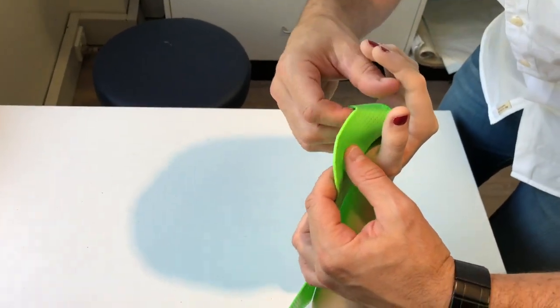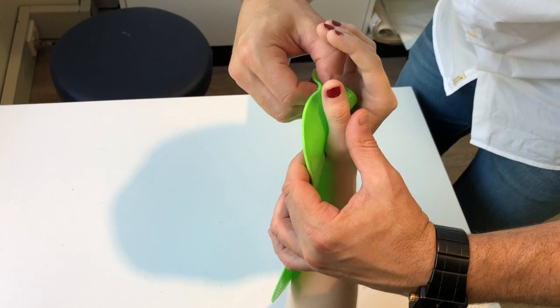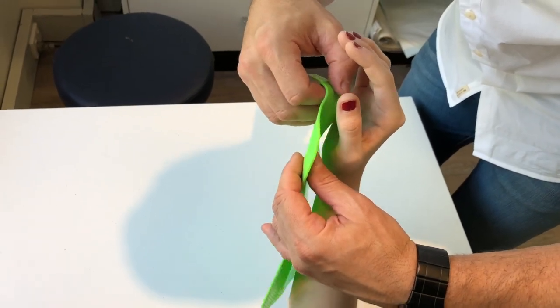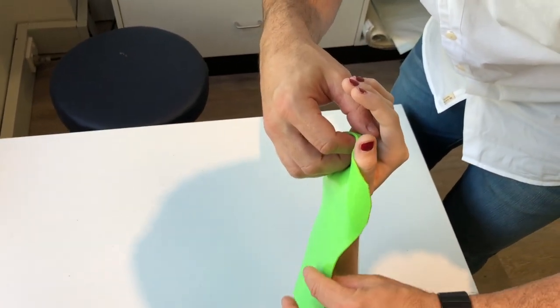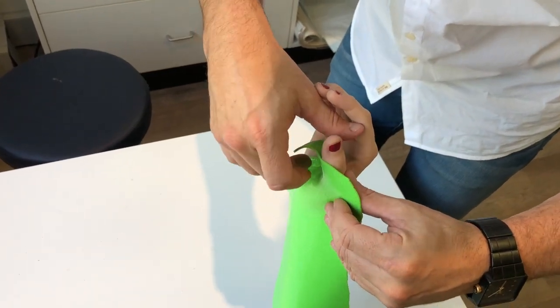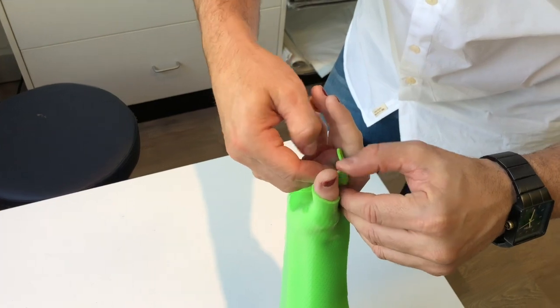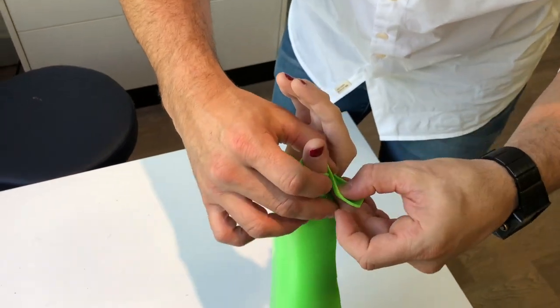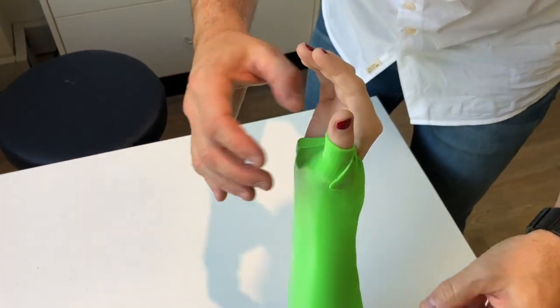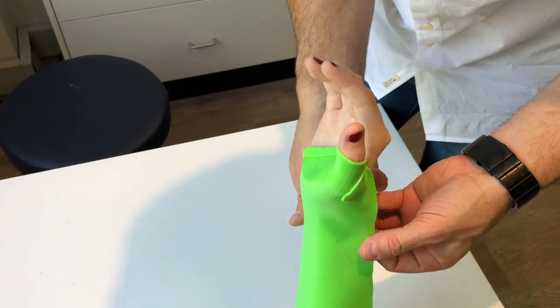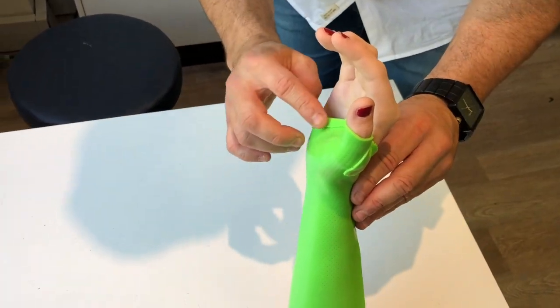So we're aligning, making sure it's in line with our distal palmar crease. Aligning the thumb piece and then we secure it by bringing the tab around. Our tab comes around. The splint's secured. We're using the stretch in the material.